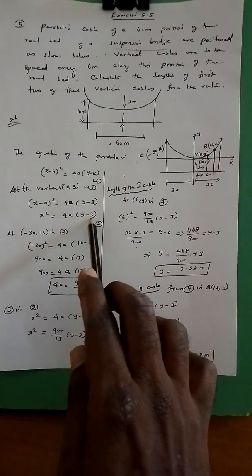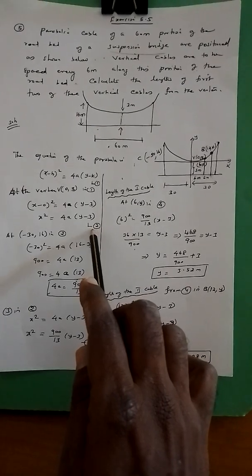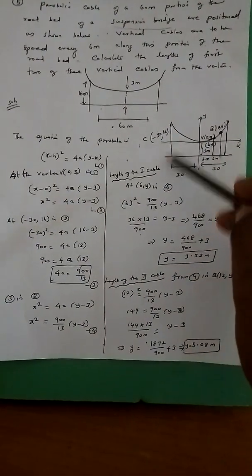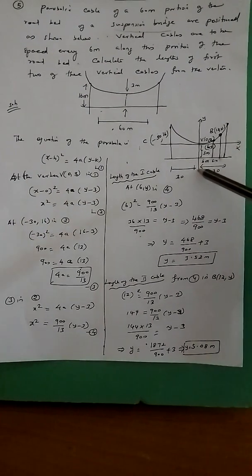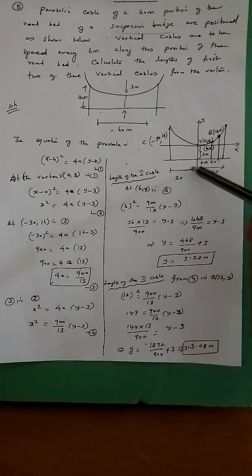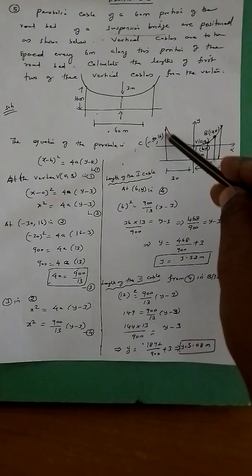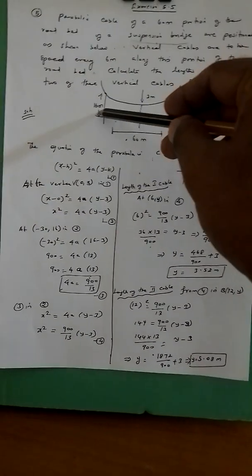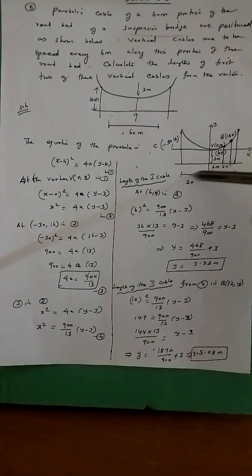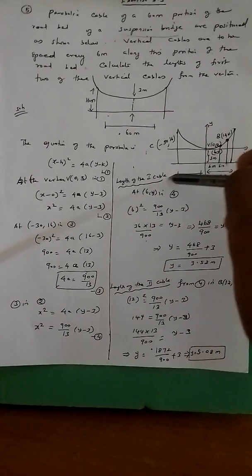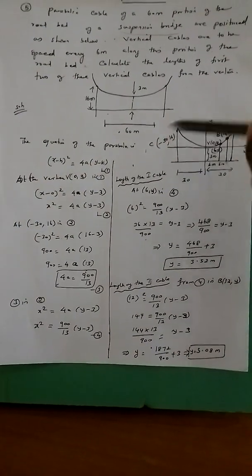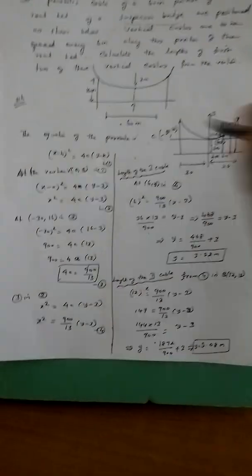The equation is x² = 4a(y − 3). On the left side, we know the distance is 13 but the height is 16 meters. With x equal to 30 in the negative direction, x = −30, and y = 16, giving us the point C at (−30, 16).